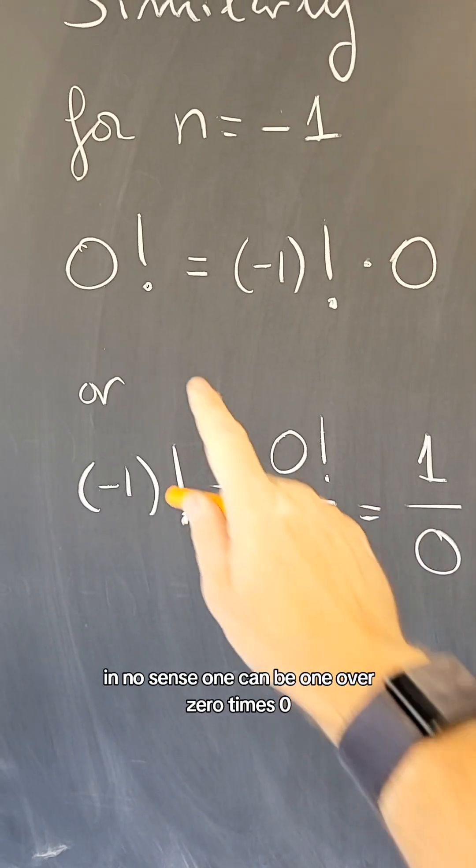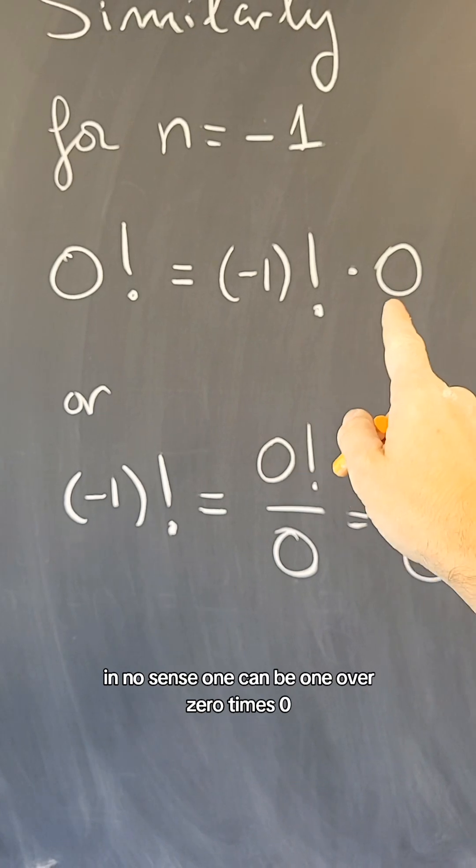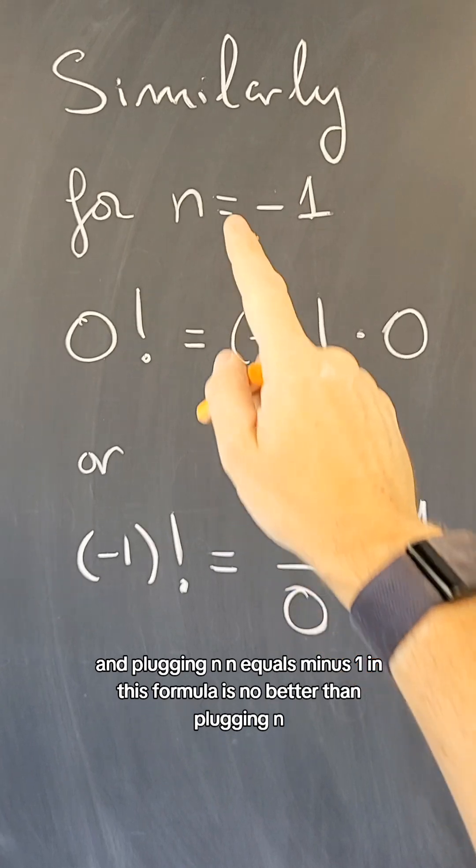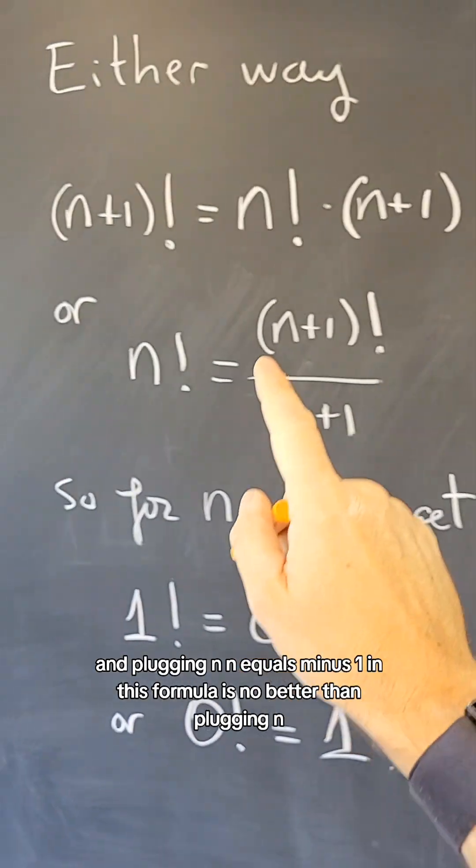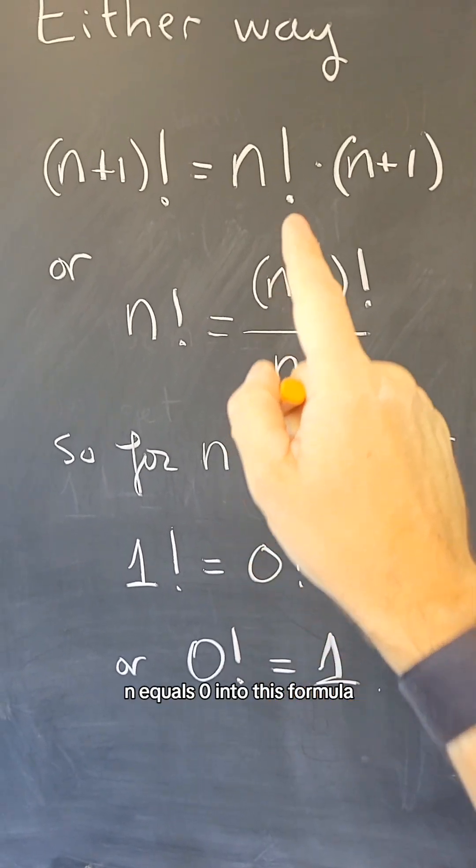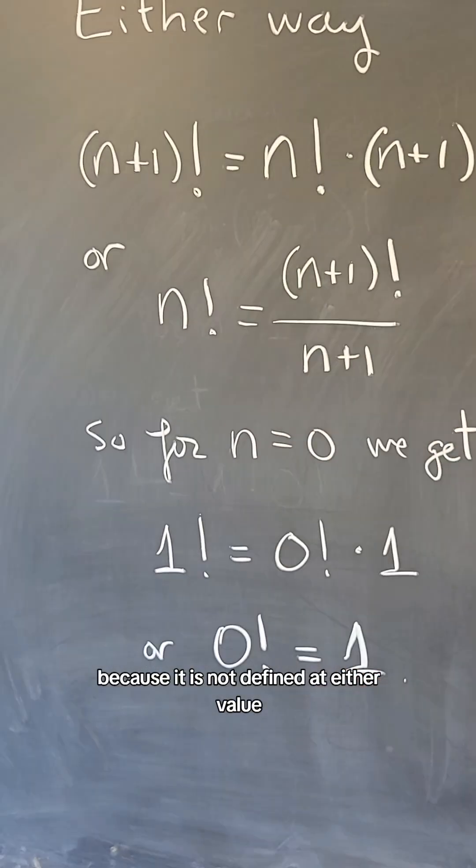In no sense, 1 can be 1 over 0 times 0, so this makes absolutely no sense. And plugging in n equals minus 1 in this formula is no better than plugging in n equals 0 into this formula because it is not defined at either value.